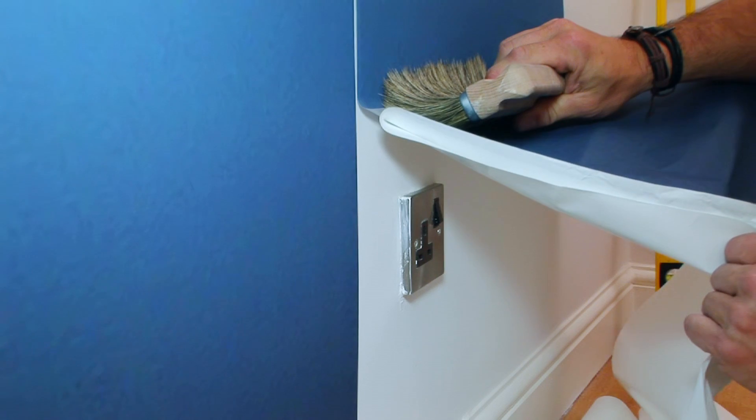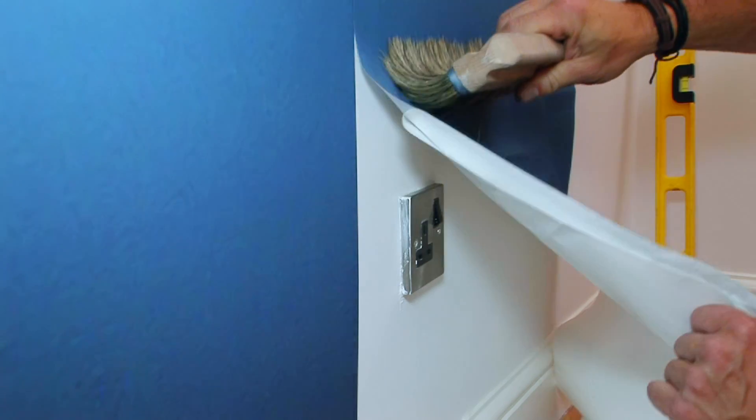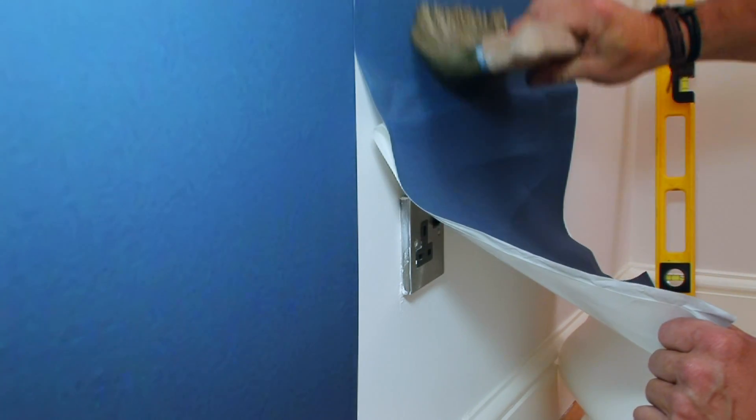To cut around a plug or another obstruction on your wall, smooth the sheet above the plug. Locate the corner of the plug.